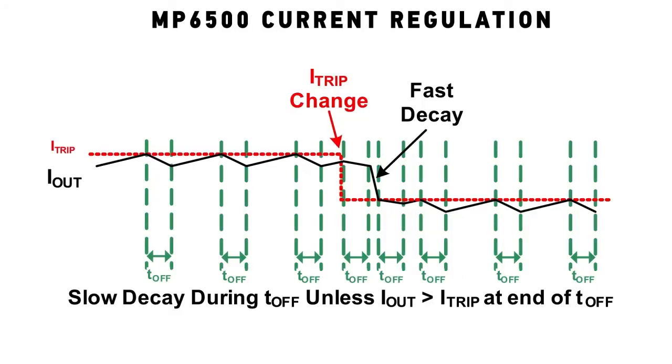The MP6500 avoids these problems by monitoring the current during the PWM off-time as well as during the on-time. It normally uses slow decay but switches to fast decay on a cycle-by-cycle basis only as needed to keep the current in control. This minimizes current ripple and average current errors.